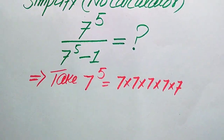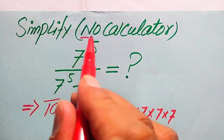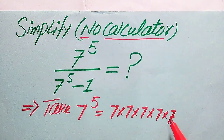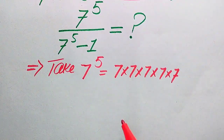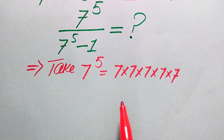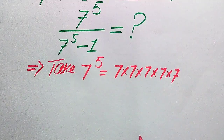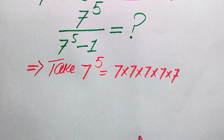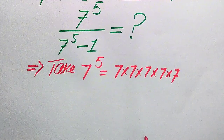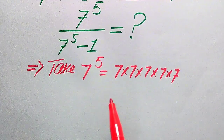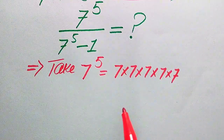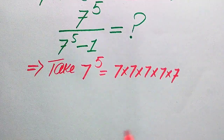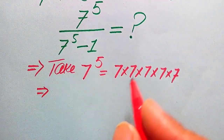Remember that in this question the calculator is not allowed. This means we need to show all of the working on paper. That's why we do these steps — because the calculator is not allowed, we first convert this expression into the lowest form and then do the multiplication or any other steps.